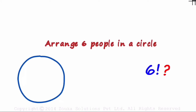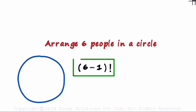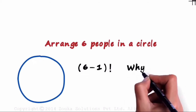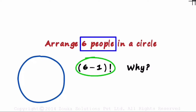Most of us know the answer here — it will not be the same. It's six minus one factorial — these many ways in which we can arrange six people in a circular fashion. But why? Why do we subtract one? This is exactly what most don't know, and most won't even try to understand, because it's a simple formula: n people around a circular table can be arranged in n minus one factorial ways.